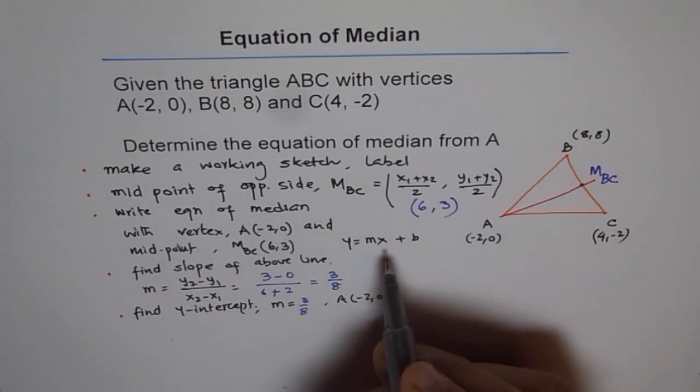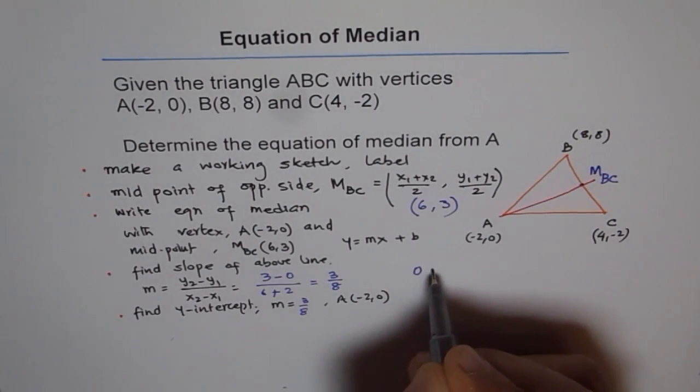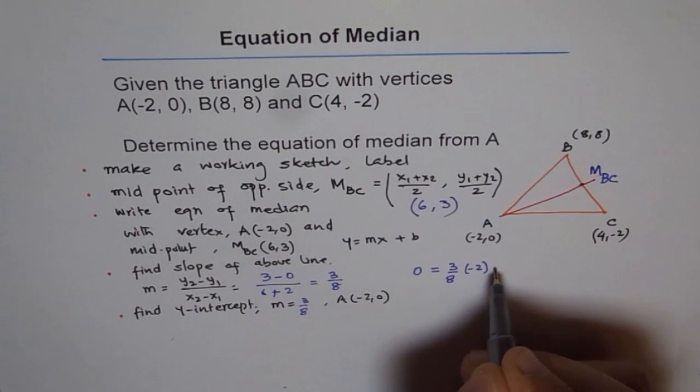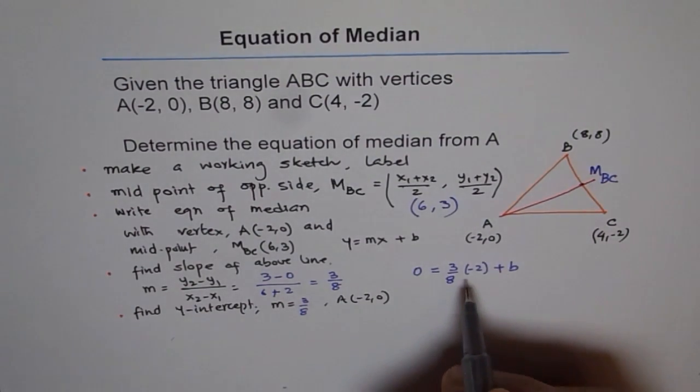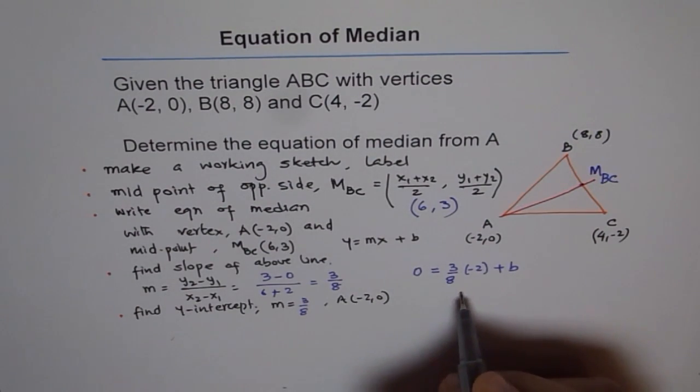So we'll find Y-intercept. And let's do this calculation here. Y equals MX plus B, right? So Y is 0 for us. So we'll write 0 equals slope is 3 over 8, 3 over 8. And X value is -2. We'll write -2 plus B. Now from here, we can simplify and find B.